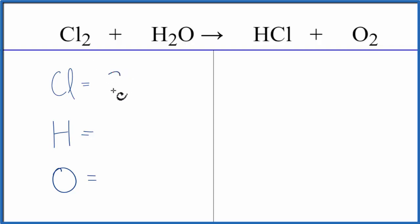We have two chlorines, two hydrogens, and one oxygen. On the product side we have one chlorine, one hydrogen, and two oxygens.